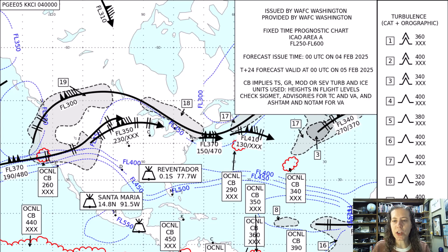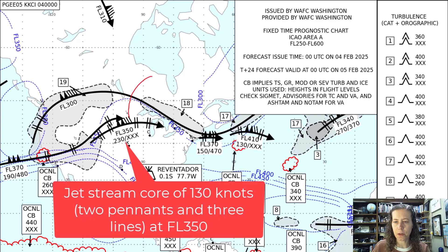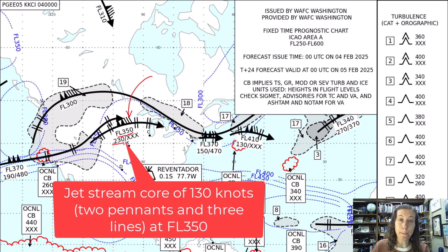The chart also shows jet stream locations and the jet stream core. For example, the jet stream currently over the United States shows the core predicted at flight level 350, with the bottom of the jet stream at flight level 230, and it extends somewhere above the chart — above flight level 600.